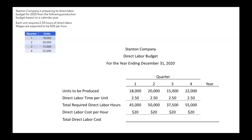To find our total direct labor cost, we take our required direct labor hours multiplied by our cost per hour. So in quarter one, if we needed 45,000 hours of direct labor and each hour was going to cost $20, we multiply those two together — and that's how we get our total direct labor cost.